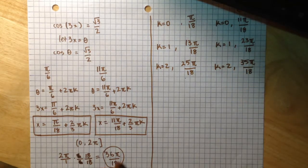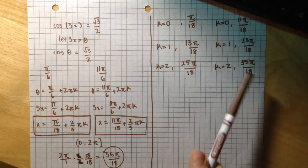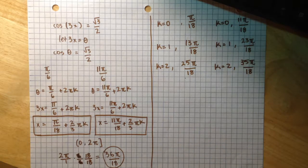So we know we have to stop at 36π over 18, and we have reached 35π over 18, so this is a good place to stop.